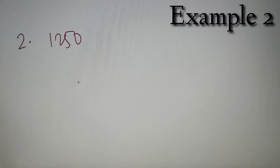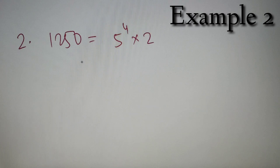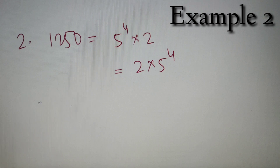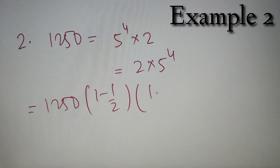For our second example, we have to find the Euler's Totient value of 1250. Now 1250 = 625 × 2 = 5⁴ × 2. So the prime factorized form of 1250 is 2 × 5⁴. Note that the smaller prime number is written first and the larger prime number at the back — this is the general convention for writing prime factorized form. Applying the formula: φ(1250) = 1250 × (1 − 1/2) × (1 − 1/5).